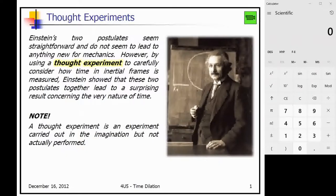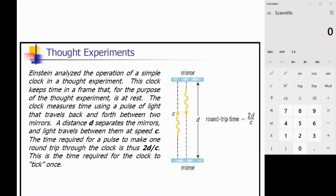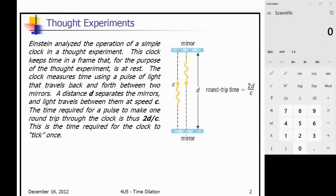What Einstein did was he basically posited these theories and imagined if we were traveling at close to the speed of light, what would happen? And considering that we have a speed of light limit, what would happen to our understanding of time?